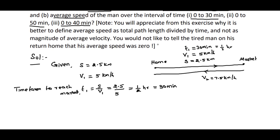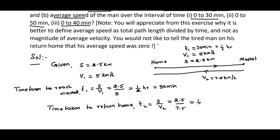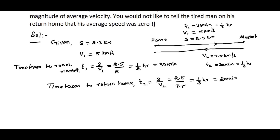For the return journey, T2 is the time taken to return home. T2 is equal to s divided by v2, that is 2.5 kilometers divided by 7.5 kilometers per hour, which equals 1/3 hour. Converting to minutes, that is 20 minutes. So for the return journey it takes only 20 minutes, that is 1/3 hour. This is the information we have calculated: T1 and T2.